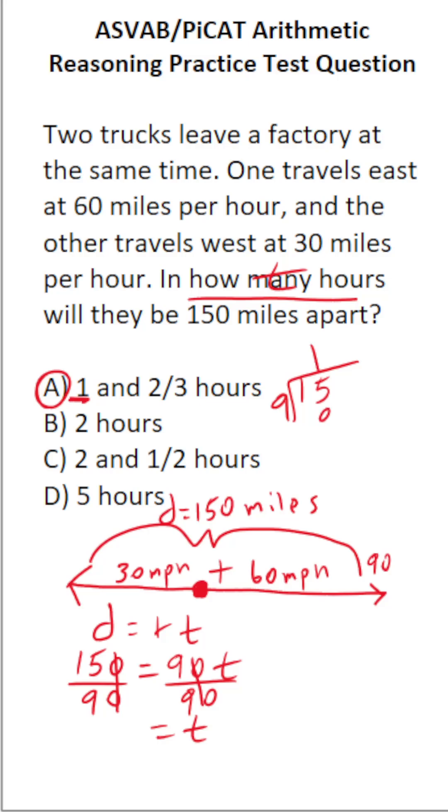9 times 1 is 9. 15 minus 9 is going to be 6. We have to add a decimal and a zero placeholder. Bring the decimal into our answer and drop down that zero. 9 goes into 60, 6 times without going over. 9 times 6 is going to be 54. 60 minus 54 is 6. We have a zero that we can drop down. You can see that this is just going to be 1.666 repeated.